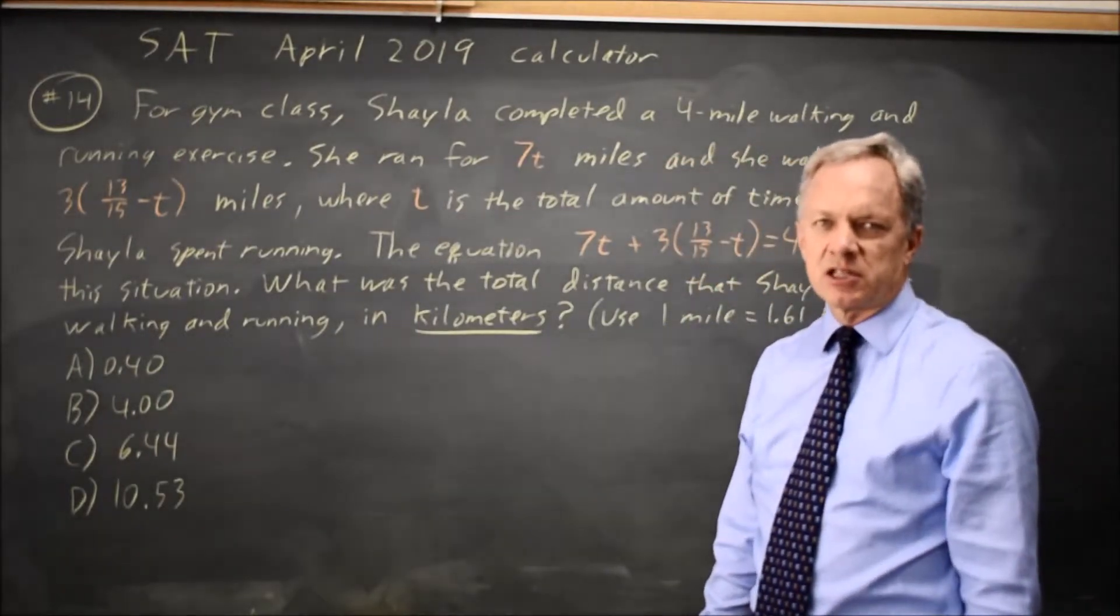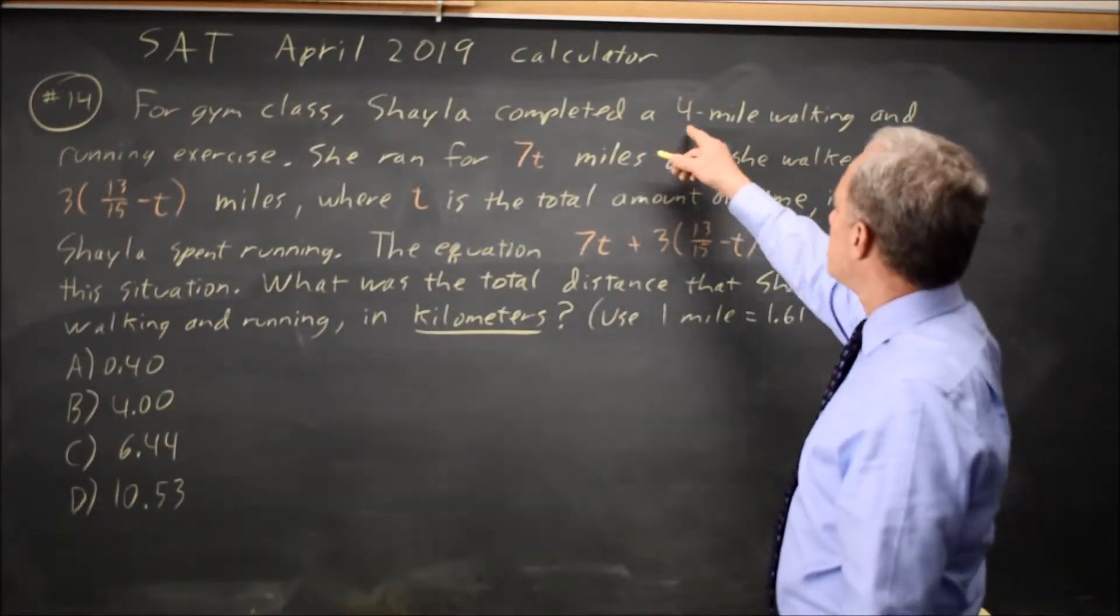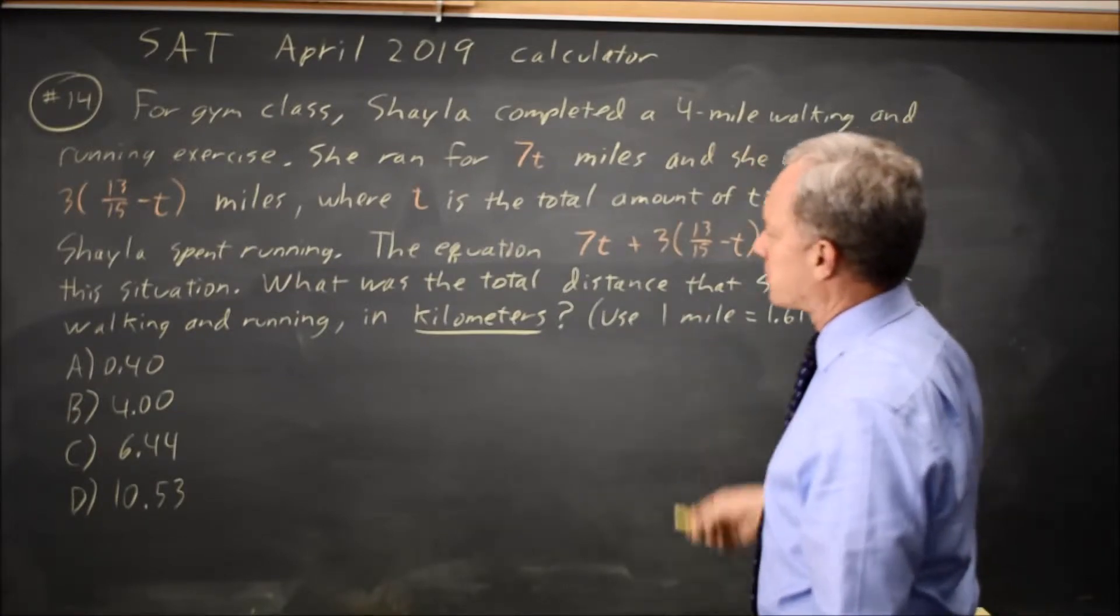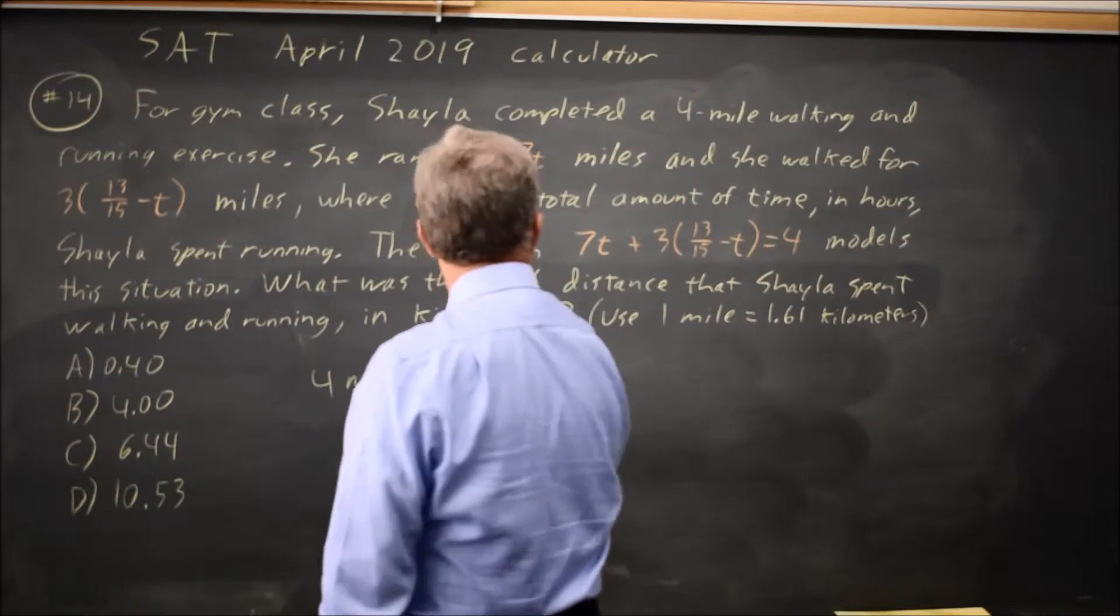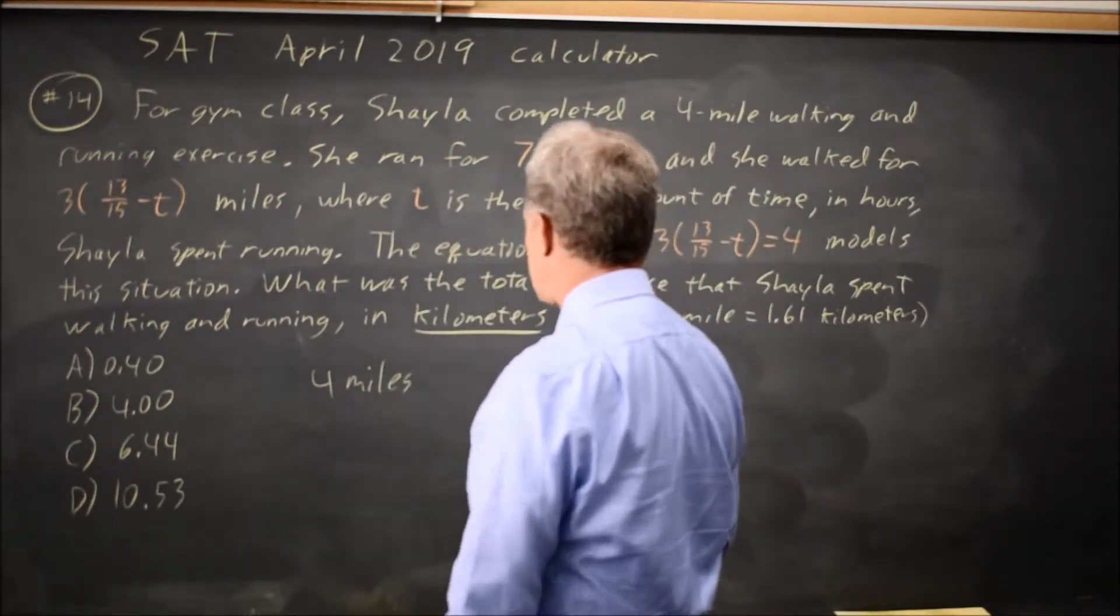College Board often asks us to convert units, and we're told she completed a four-mile walking and running exercise. So I have four miles, and I'm also told one mile equals 1.6 kilometers.